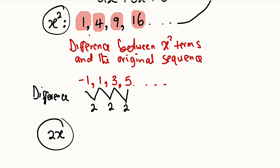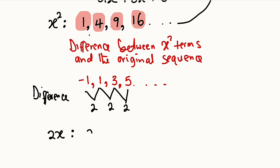We form another sequence by substituting x = 1 to 4 into 2x: when x = 1 we get 2, when x = 2 we get 4, when x = 3 we get 6, when x = 4 we get 8.